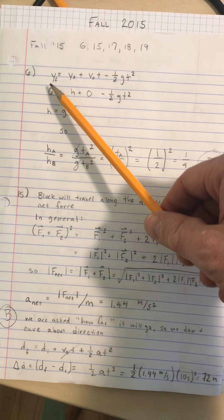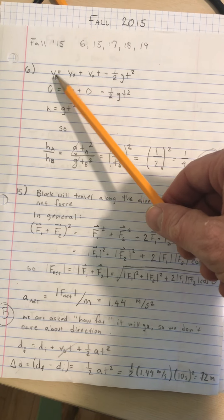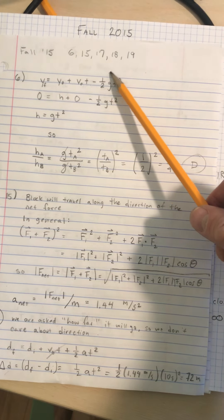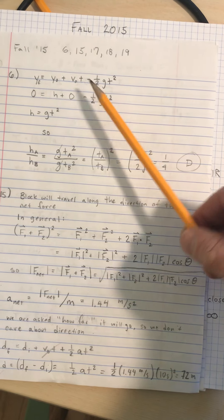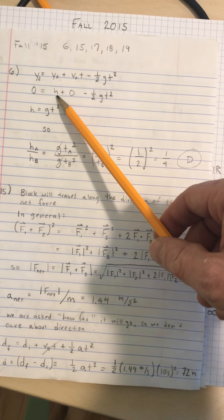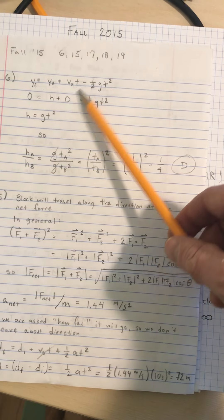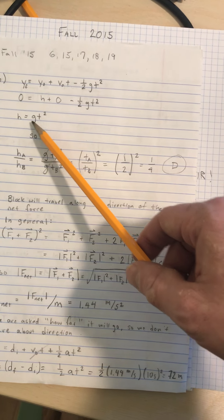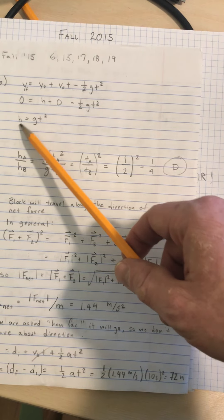We're going to use the formula for distance traveled: the final position equals the initial position plus initial velocity times time minus one half GT squared. The initial height is h, the final position is zero, the initial velocity is zero, so we end up getting that h equals GT squared. So we know that the height is going to be related to the airtime squared.